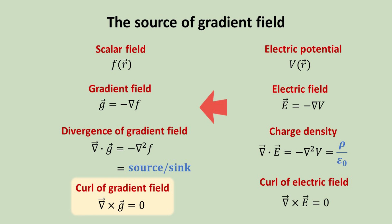Then, by analogy, a general gradient field, which has exact mathematical mapping to the electric field, must also have zero curl. Thus, we have shown why the curl of gradient field must be zero.